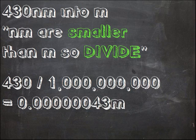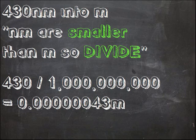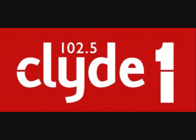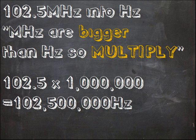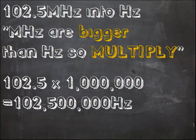If you need to change 430 nanometres into metres, then say: nanometres are well smaller than metres, so I need to divide. And because it's nano, my number is a billion. What about changing 102.5 megahertz into hertz? Megahertz are bigger than hertz, so I need to multiply. For mega, my number's a million — so it's 102,500,000 hertz.